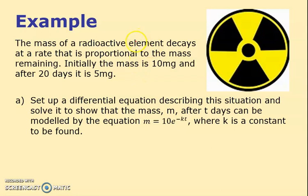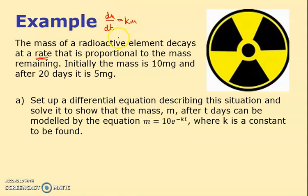The next example: the mass of a radioactive element decays at a rate proportional to the mass remaining. Whenever I see the word 'rate' I write a differential, so dm/dt equals km. We're given two pieces of information: initially (t equals 0) mass m equals 10, and after 20 days (t equals 20) mass equals 5.